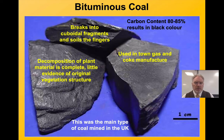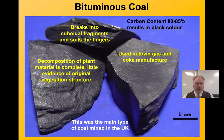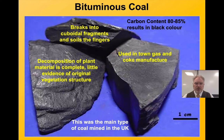By the time we get to bituminous coal, we've got much higher carbon content — up to about 85%. It's a distinctive black colour, but this one tends to be dull in appearance and we don't see much of the original plant material. This was the main type of coal used to manufacture coke for blast furnaces, for domestic use, and to produce town gas. It's a common and commonly-used type of coal.